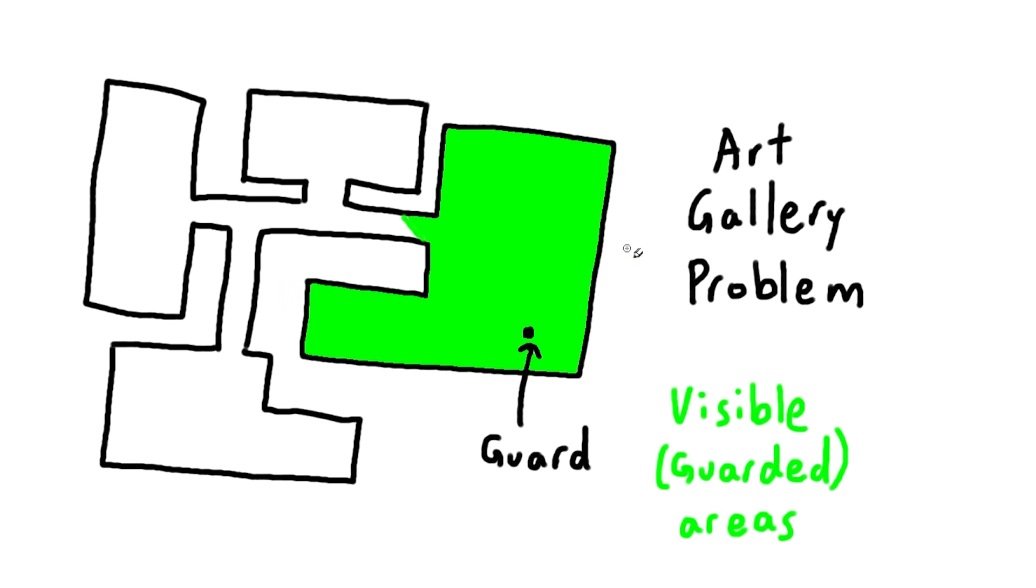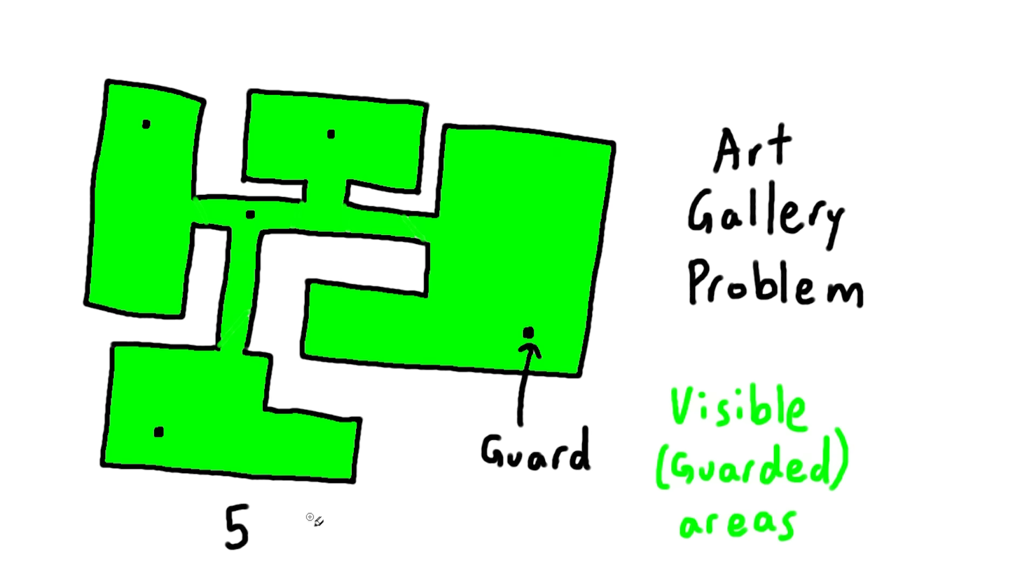But each guard can only see one part of the museum, so you need multiple guards throughout to make sure every spot is visible to at least one guard. Our goal is to find the minimum number of guards needed to make sure every spot in the museum is covered.